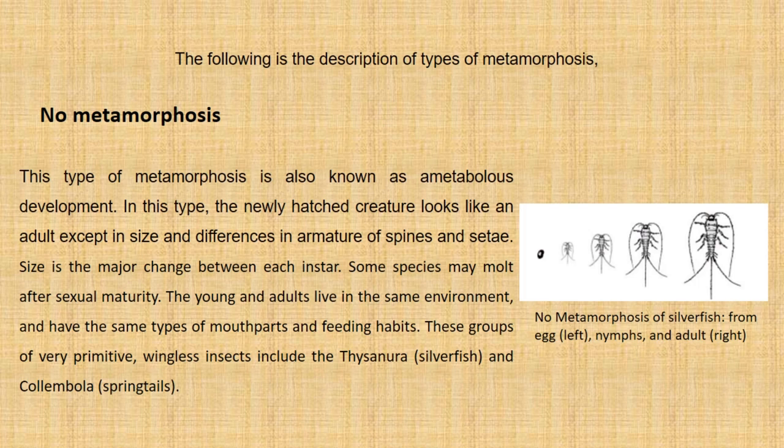No metamorphosis, also known as ametabolous development. In this type, the newly hatched creature looks like an adult except in size and differences in armature of spines and setae. Size is the major change between each instar. Some species may molt after sexual maturity. The young and adults live in the same environment and have the same types of mouthparts and feeding habits. These groups of very primitive, wingless insects include the Thysanura (silverfish) and Collembola (springtails).